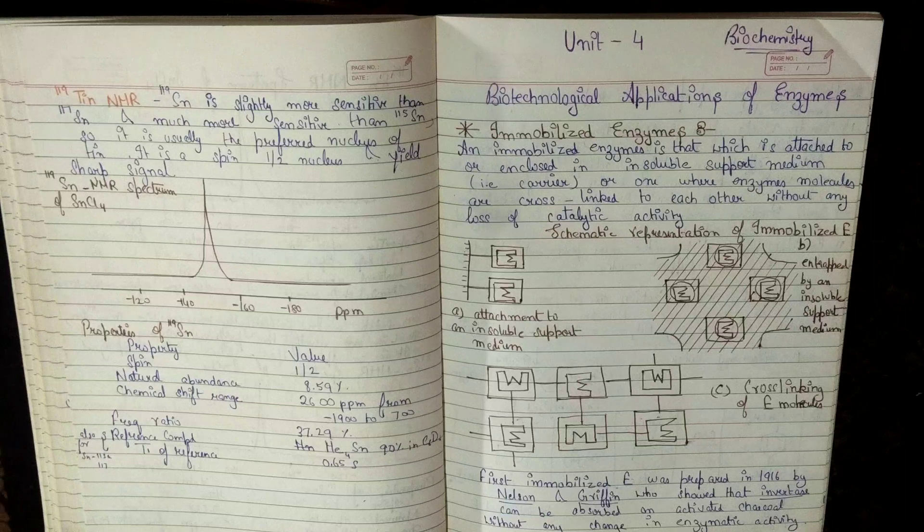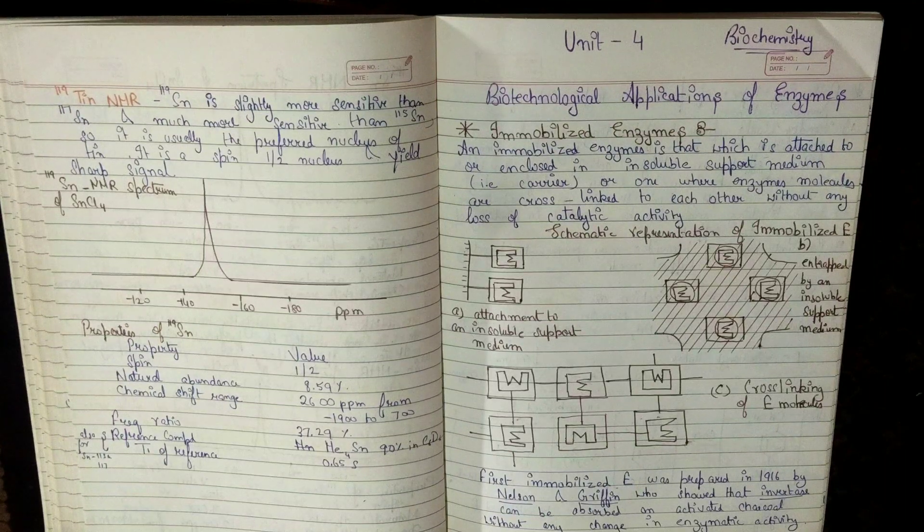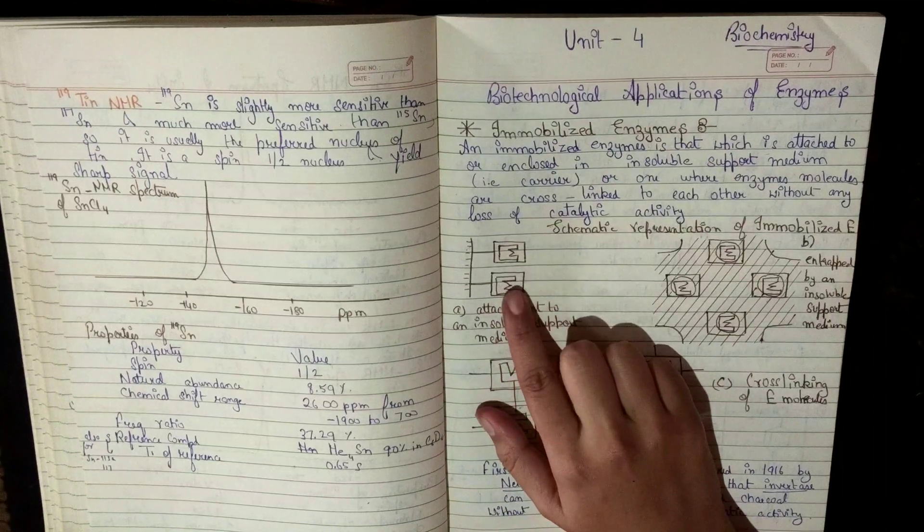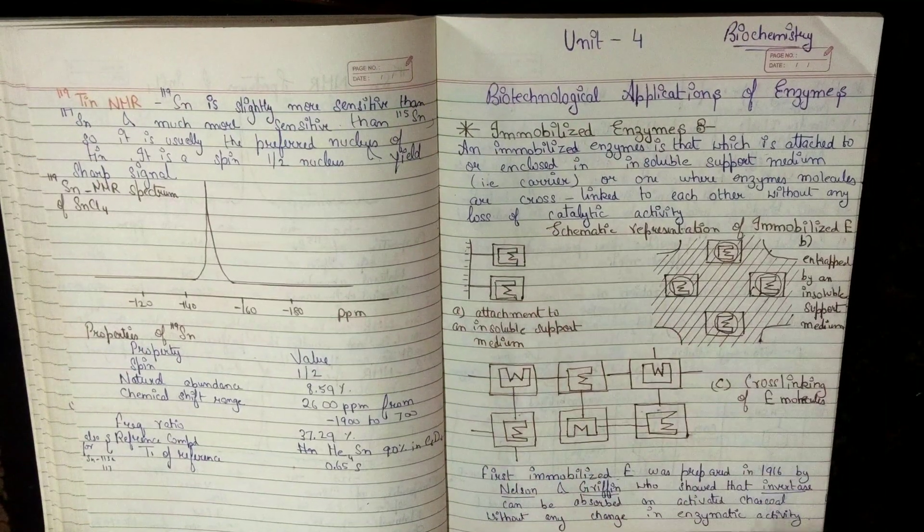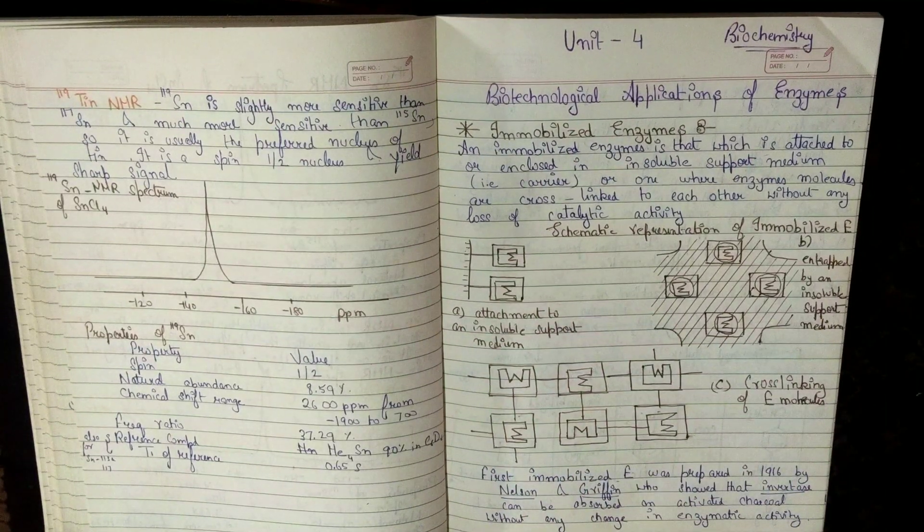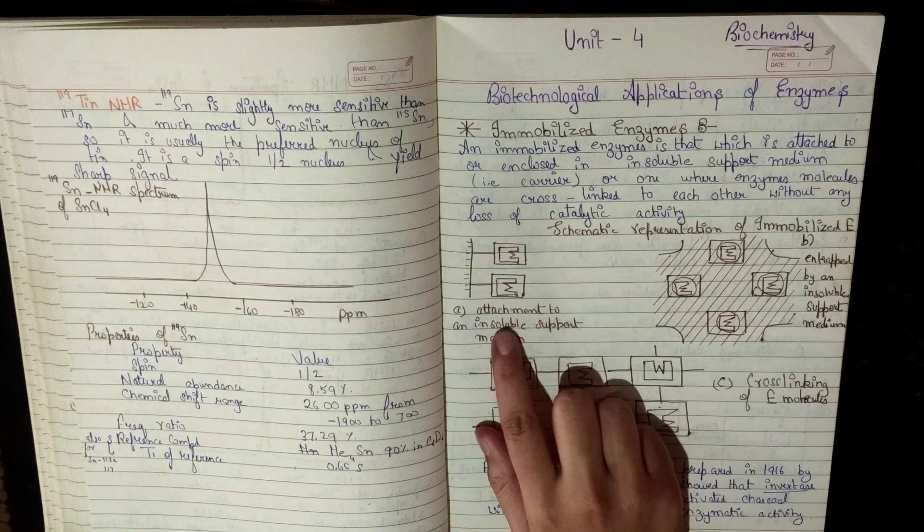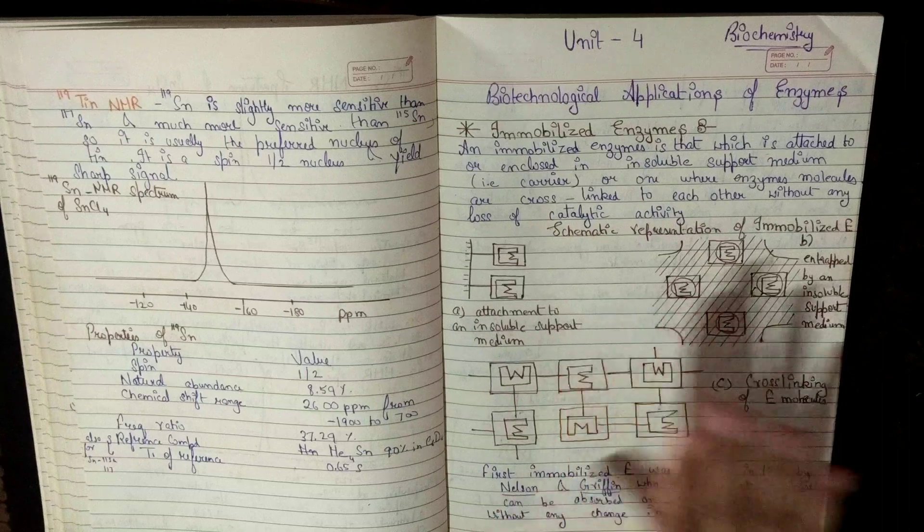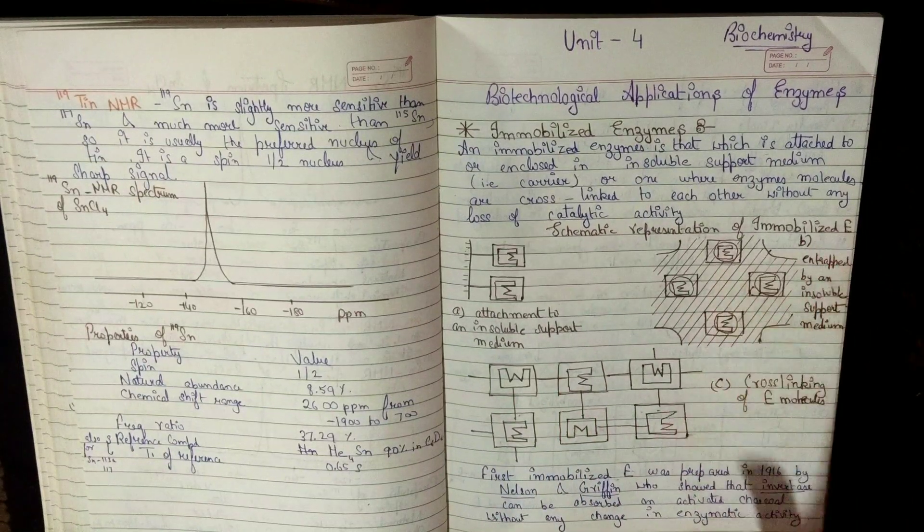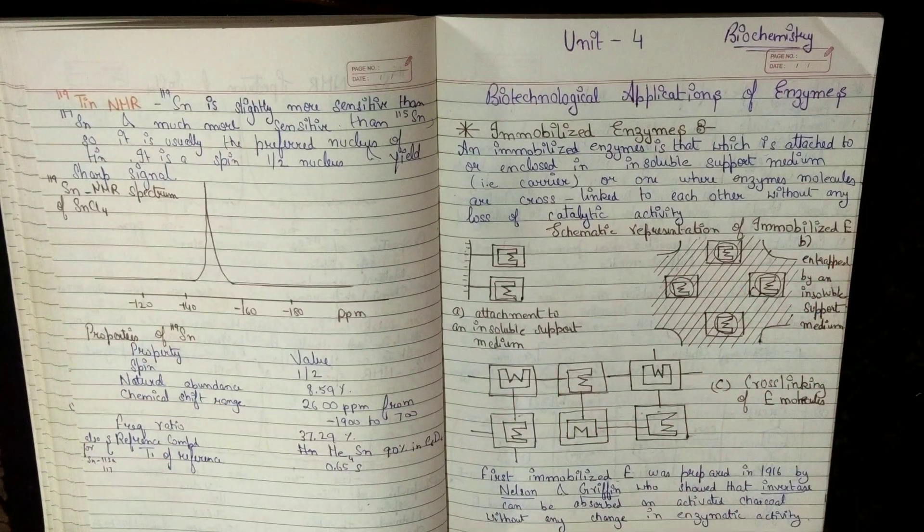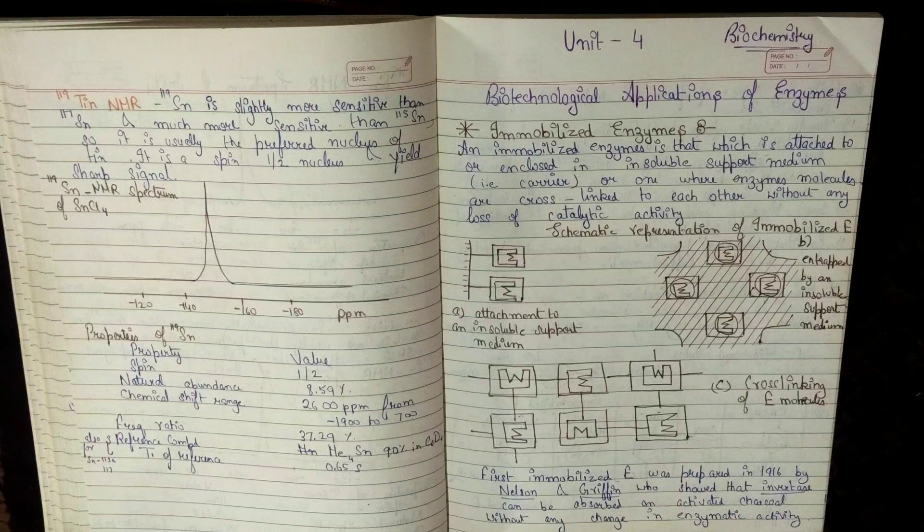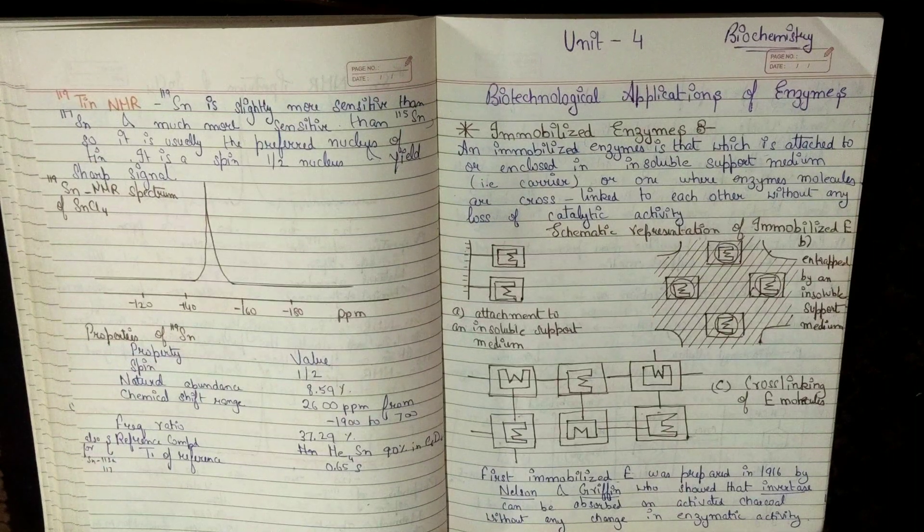Let us understand it with the help of schematic representation. This is my enzyme and this is directly attached to the insoluble support medium. In this condition, we will say immobilized enzyme. Or then, the enzyme is trapped in the insoluble support medium, or in our carrier, we will also say immobilized enzyme.